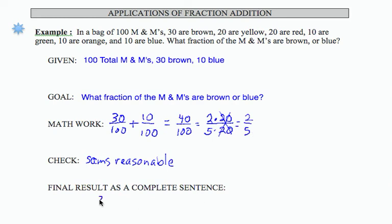So as a complete sentence then, let's write our result in answering the goal. So two-fifths of the M&Ms are brown or blue.